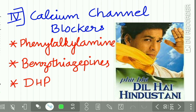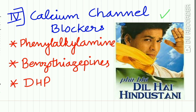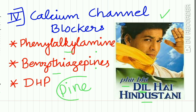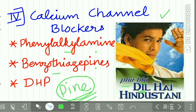The fourth class is calcium channel blockers, covered in a separate lecture — link in the description box. The mnemonic uses the first three words of the Shah Rukh Khan movie 'Fir Bhi Dil Hai Hindustani': Fir = Phenylalkylamine (verapamil), B = Benzodiazepine (diltiazem), Dil = Dihydropyridines. Remember a pineapple for the DHP list: nifedipine, amlodipine, felodipine, nitrendipine, etc.